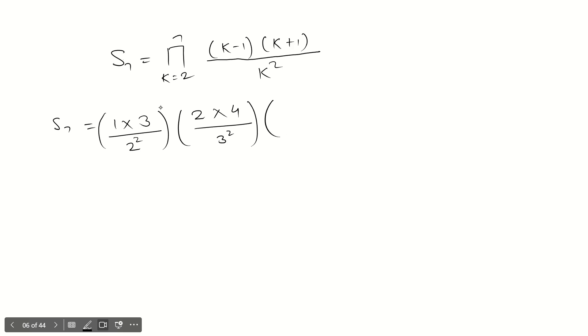Similarly, just put 4: (4-1), that is 3, times 5, divided by 4². And so on, up to n. So that is (n-1)(n+1) divided by n².